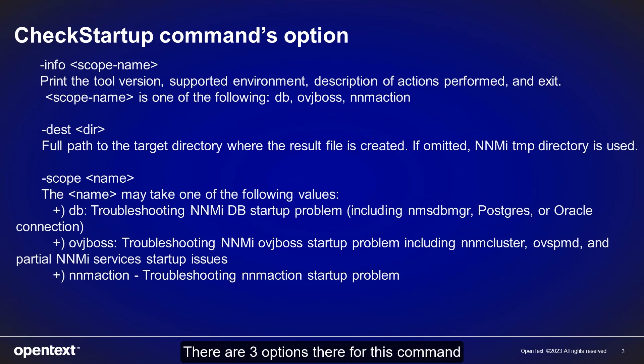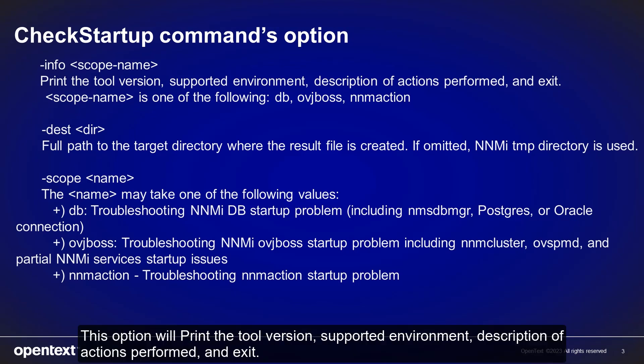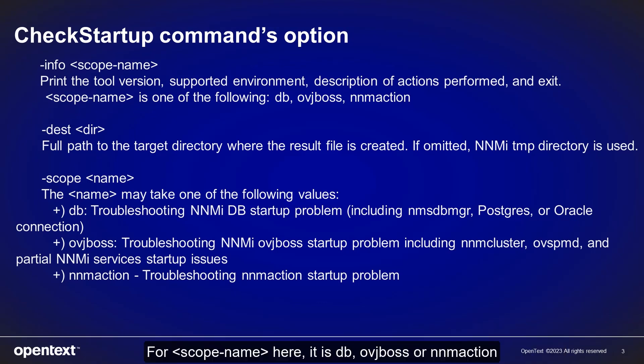There are three options for this command. The first option is info, then scope name. This option will bring the tool version, supported environment, description of the action performed, and exit. For scope name here, it's db, ovgbox, or nnm action.